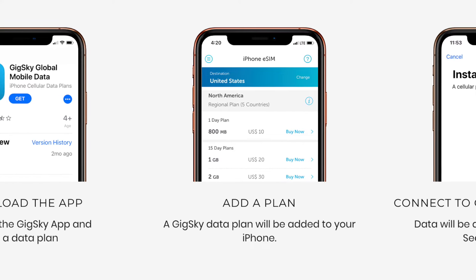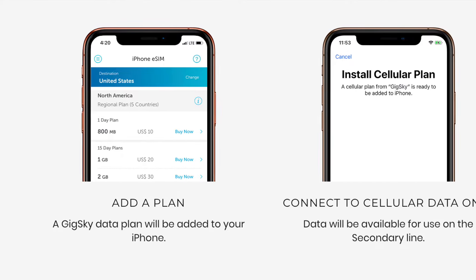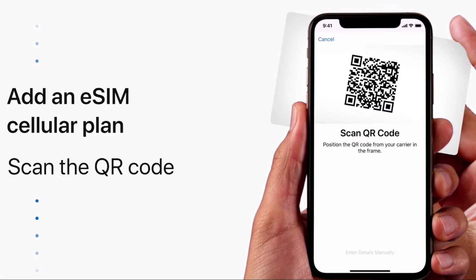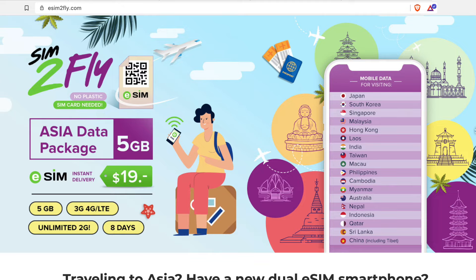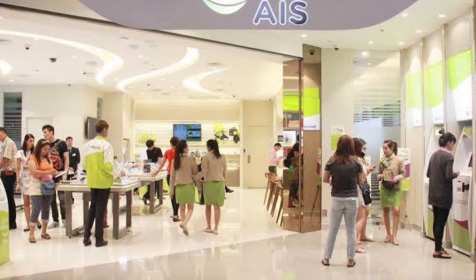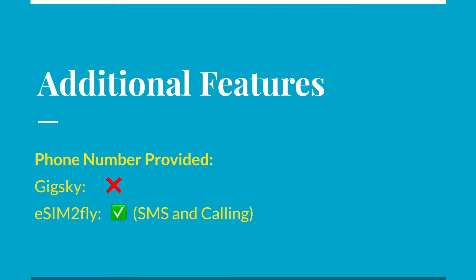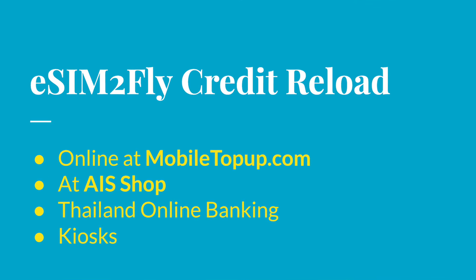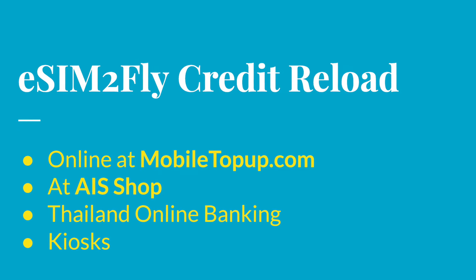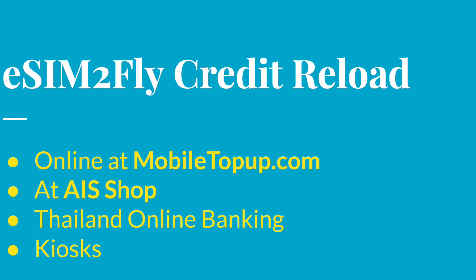GigSky is a smartphone app, which is great — you can install it anywhere and make a payment nice and easy. SIM2Fly currently can only be obtained as a QR code through various websites or in AIS shops, but only in Thailand. As far as getting a phone number, GigSky does not provide one and does not allow sending or receiving SMSs. With SIM2Fly, you will get a Thailand phone number and can make and receive calls and SMSs. You would need to add additional mobile phone credit to make calls, but normally receiving calls and SMSs in Thailand is free.